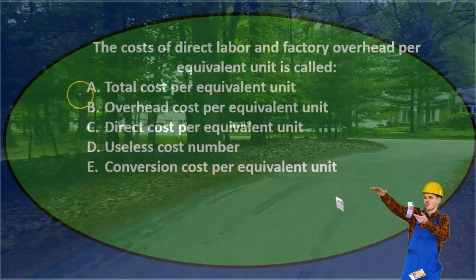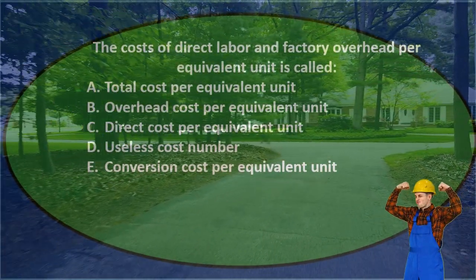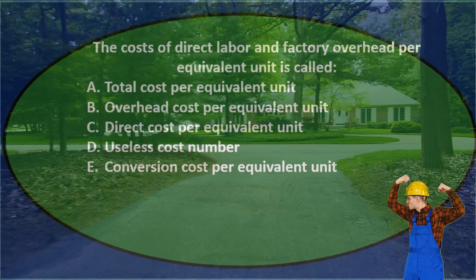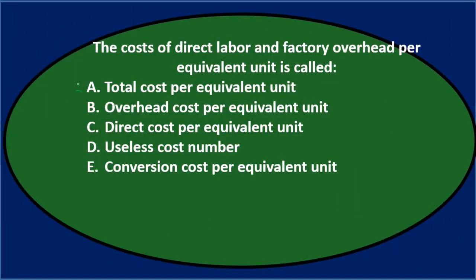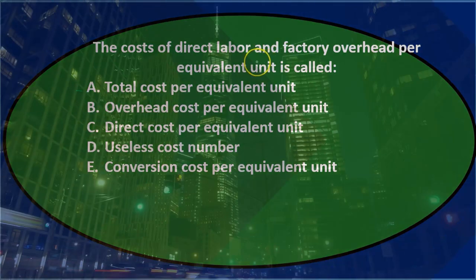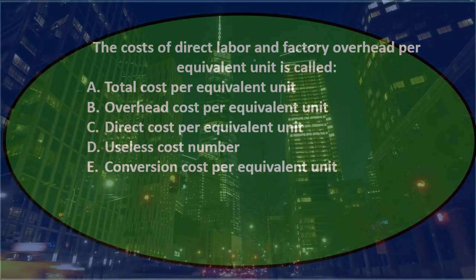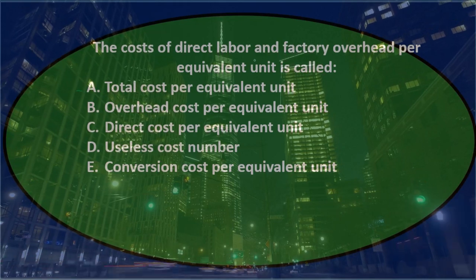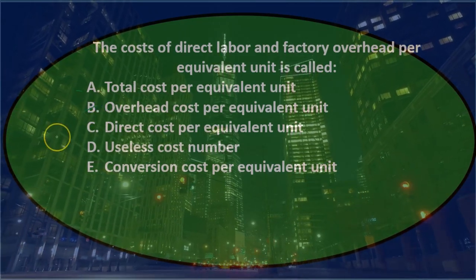Option A, total cost per equivalent unit — we might keep that for now, but it seems like it's missing something since it doesn't specify excluding materials. Option B, overhead cost per equivalent unit — it only says overhead, but the question includes both labor and overhead, so it can't just be overhead. I'll cross that out.